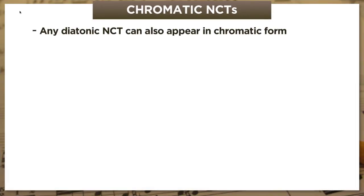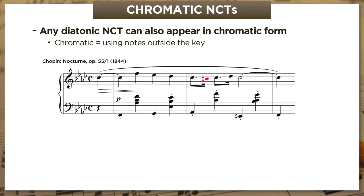Now let's address chromatic non-chord tones: pretty much any non-chord tone can appear in chromatic form, using notes from outside the key via applied accidentals. In Chopin's F minor nocturne, Op. 55, No. 1, B natural is not a note in F minor—B flat is. But instead of embellishing C with the lower B flat, Chopin uses B natural, giving the passage a more melancholy sound. This is called a chromatic neighbor tone.